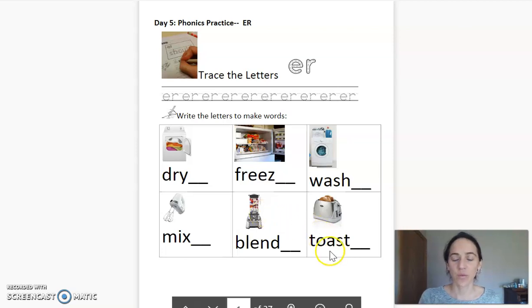And this is our last one. This is a toaster. Please write the E-R. Repeat after me. Toaster. Good. This is what we can use to toast our bread.